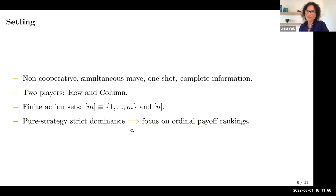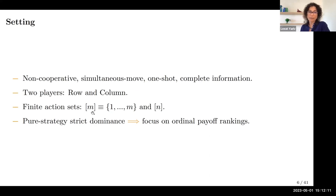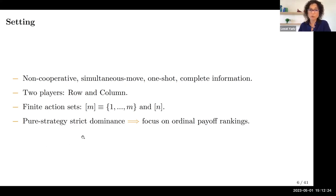Here is the setting. We're looking at non-cooperative simultaneous move one-shot complete information games — your standard normal form game. There are two players, row and column, each with a finite action set. I'll denote by m the set of actions for row — one through m — and by n the set of actions for column. Because we focus on pure strategy strict dominance, what matters is the ordinal payoff rankings, so precise payoffs don't really matter.